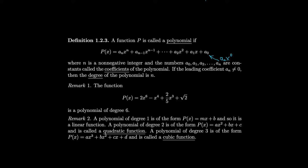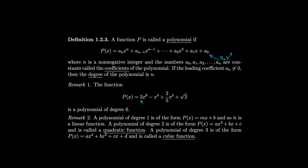You have to stop somewhere in order to have a polynomial. All these numbers out front are coefficients — in this case a₆ equals 2, a₄ equals negative 1, and a₀ is the constant at the end. A polynomial of degree 1 has the form mx plus b — that's a linear function. Degree 2, ax² plus bx plus c, is called a quadratic function. Degree 3 is a cubic, degree 4 is quartic, degree 5 is quintic, and so on.